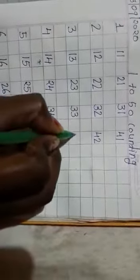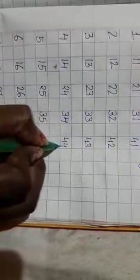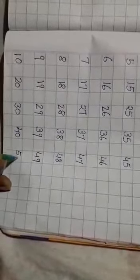Then write 41 to 50. 41, 42, 43, 44, 45, 46, 47, 48, 49, 50.